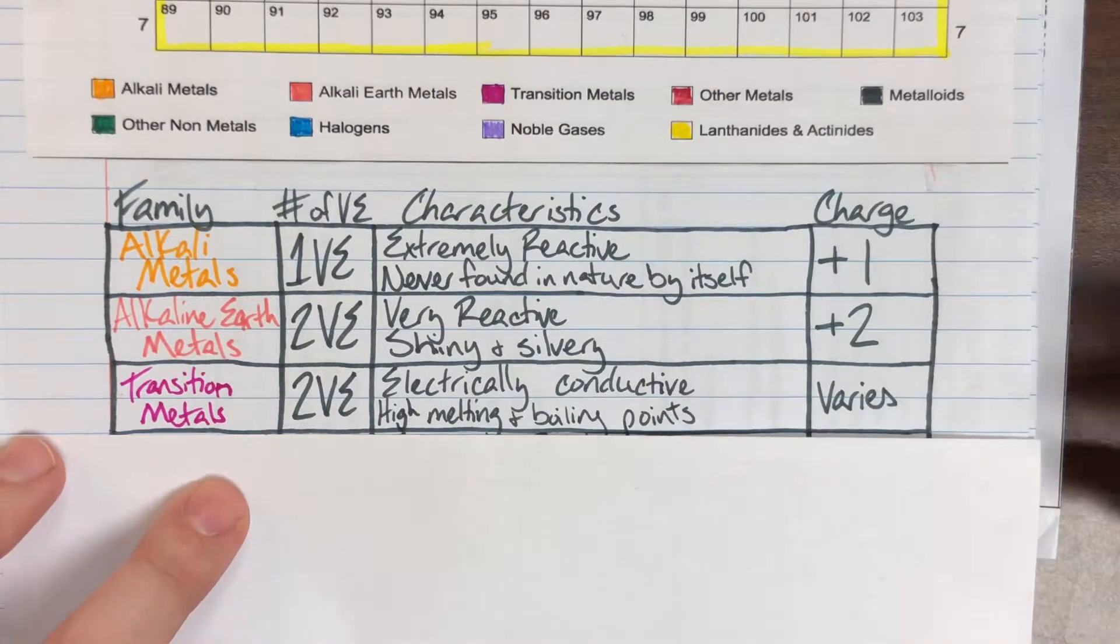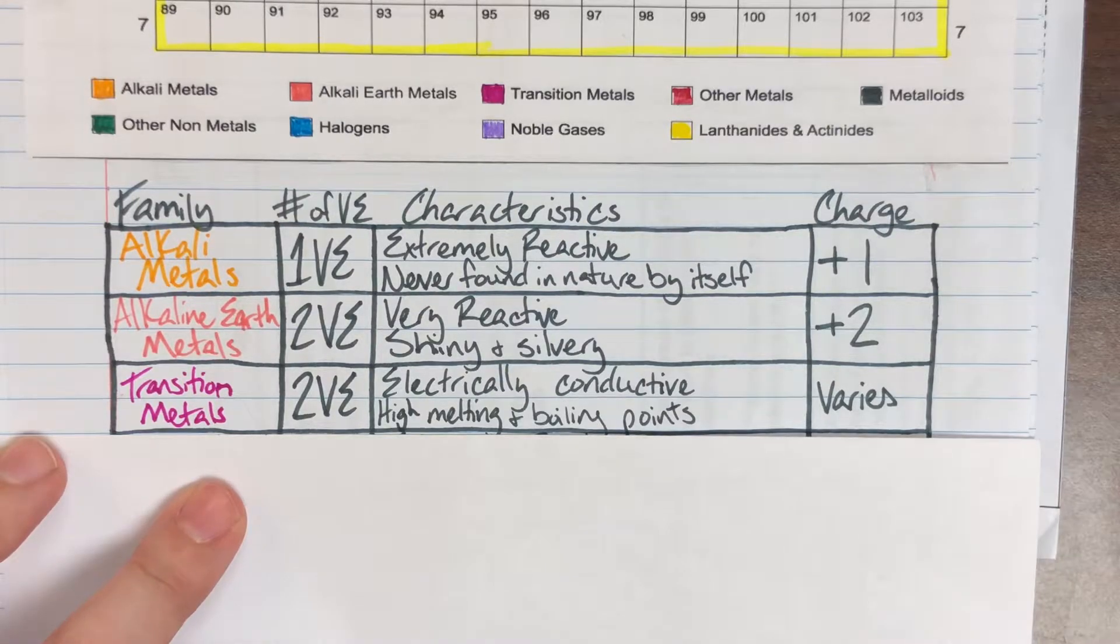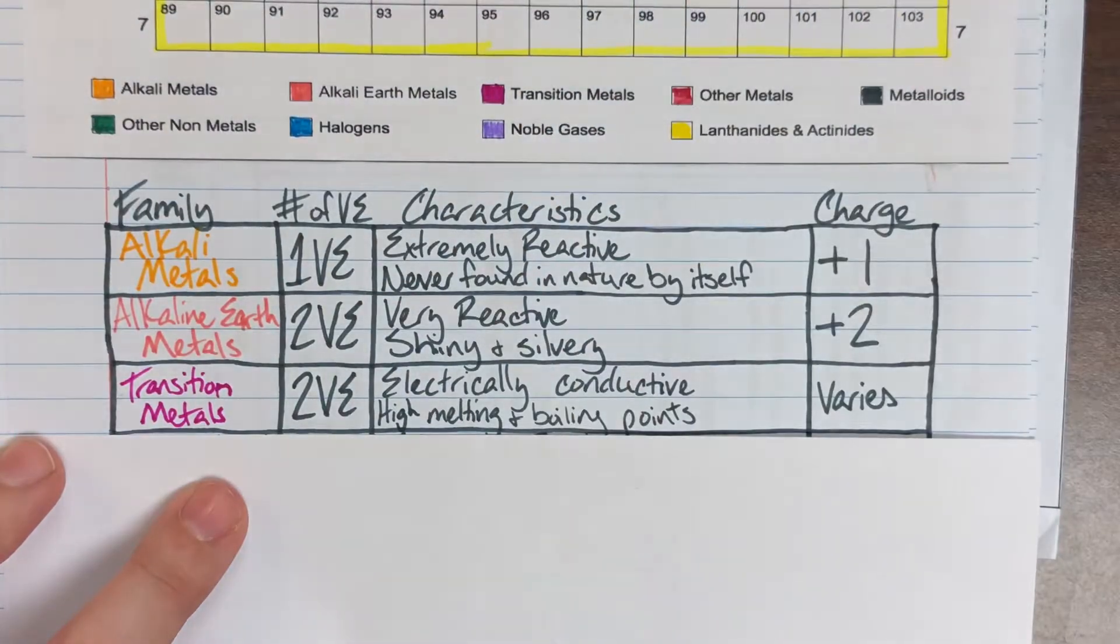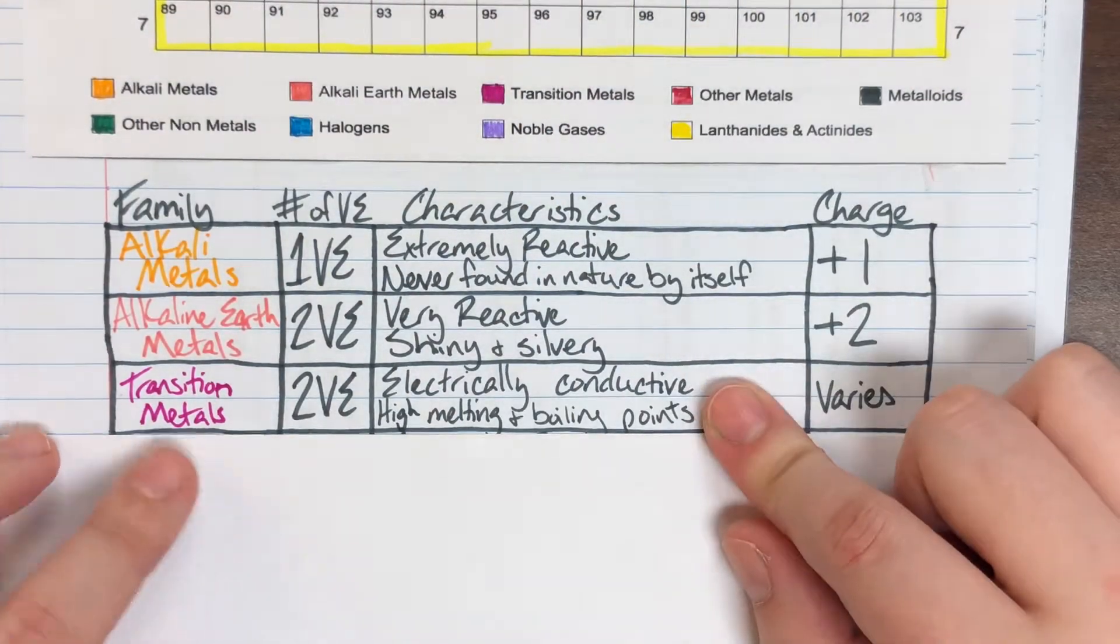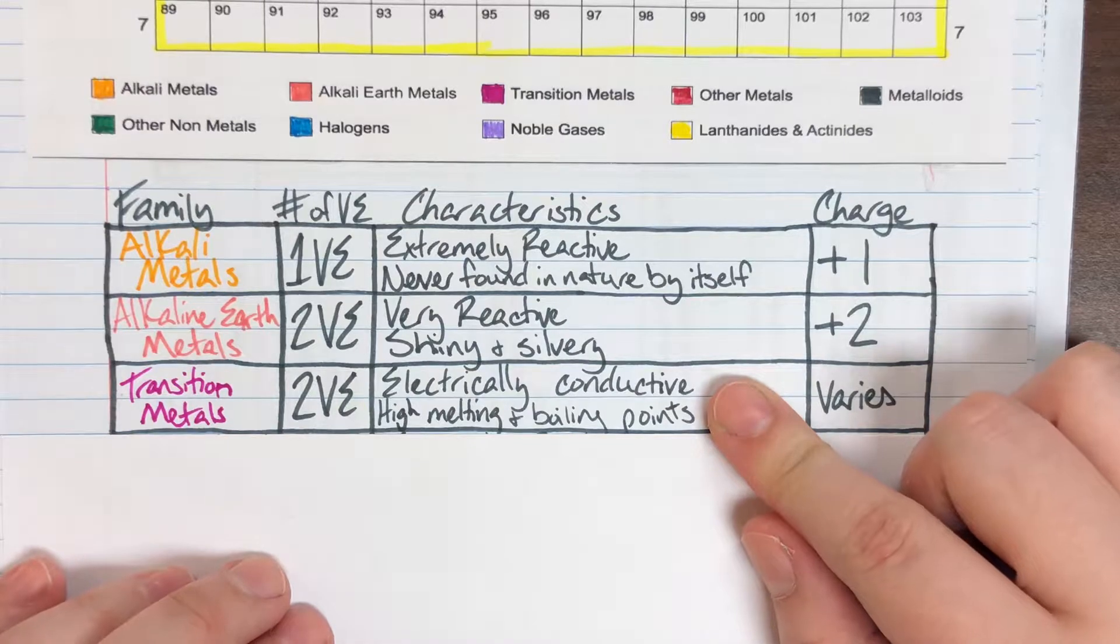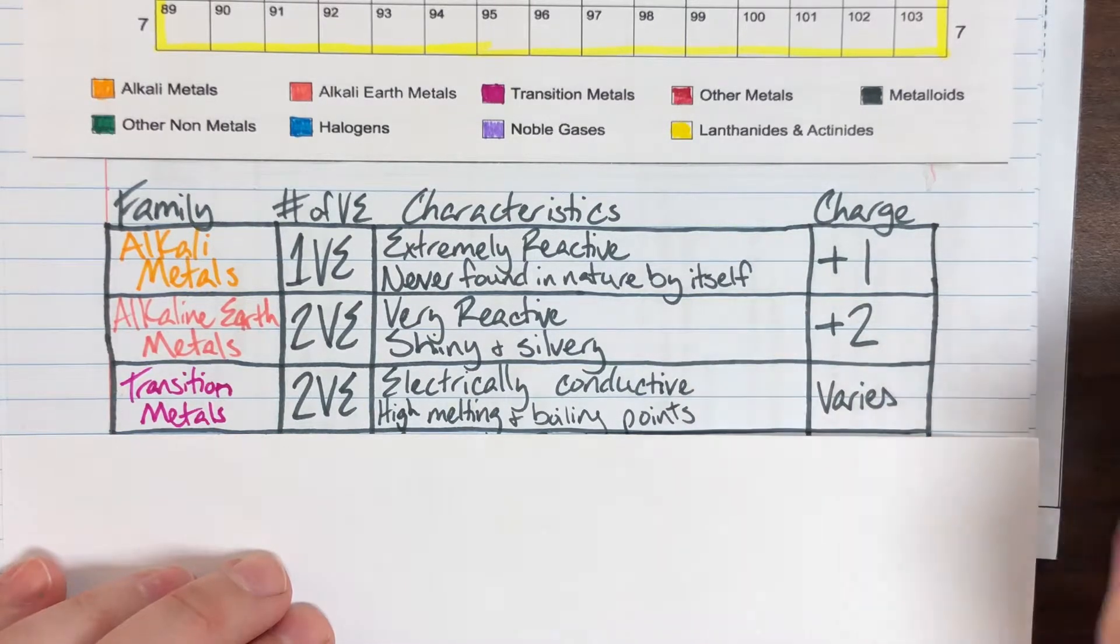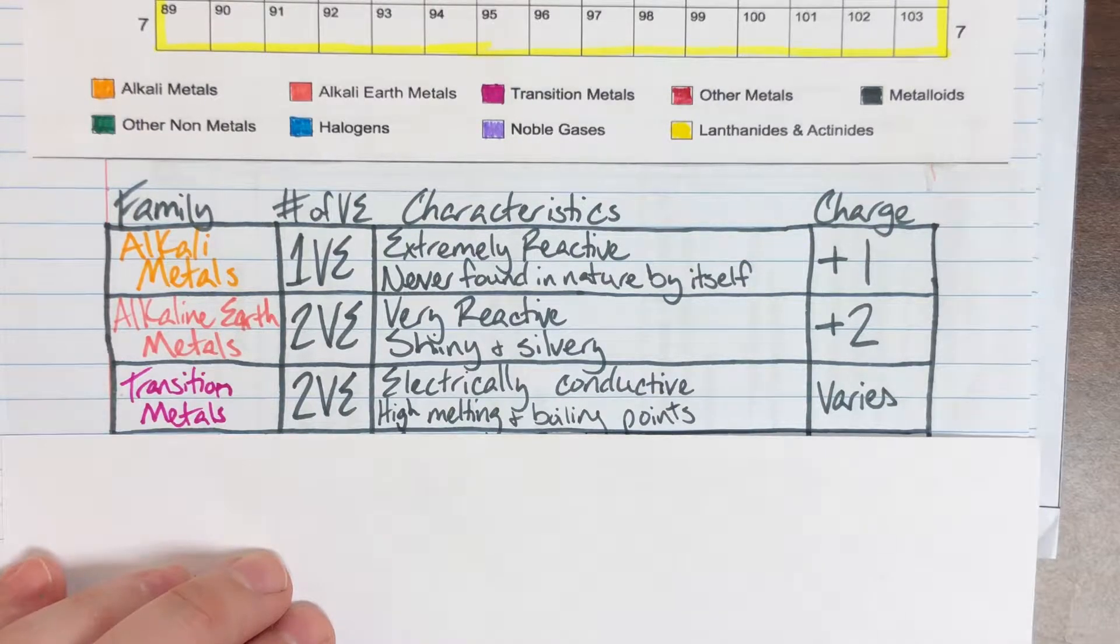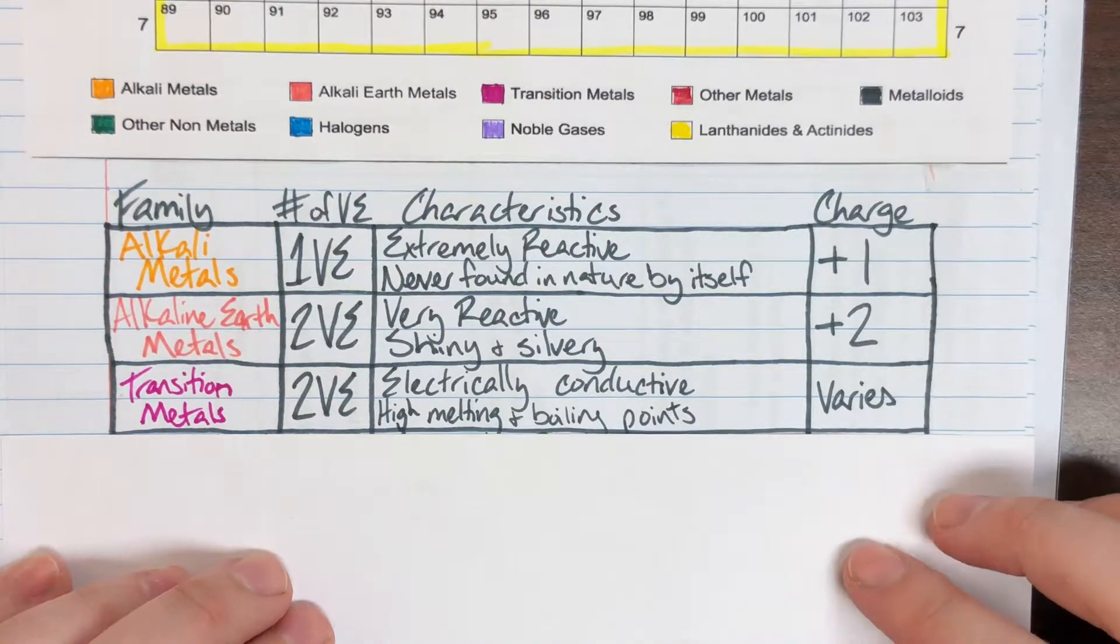Transition metals are the metals you tend to think of when you think of a metal: gold, copper, silver—those all live in that transition metal block. They have the traditional metal characteristics of electrical conductivity as well as high melting and boiling points.